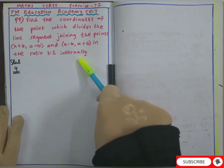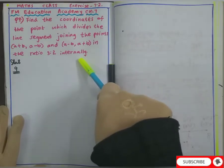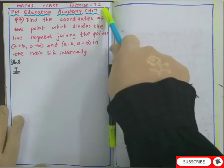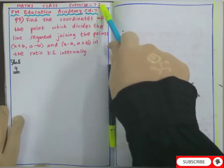In today's video lecture, we are going to see a sum from the chapter Coordinate Geometry from Exercise 7.2 of TS-SCERT Maths Class 10 SSE textbook.